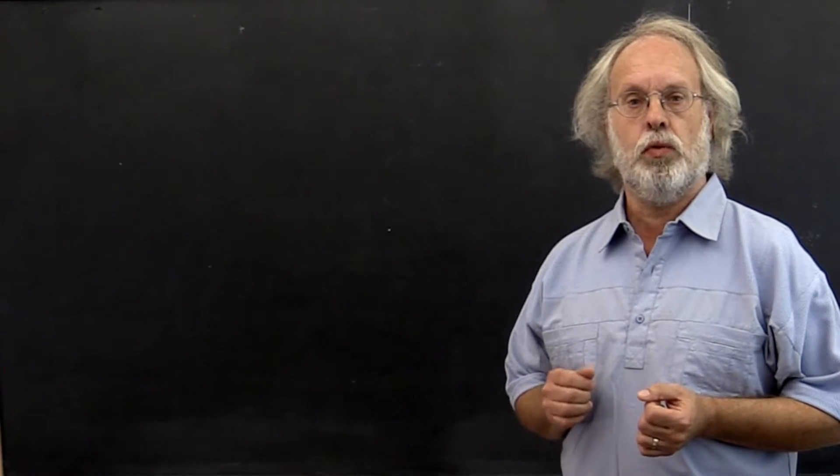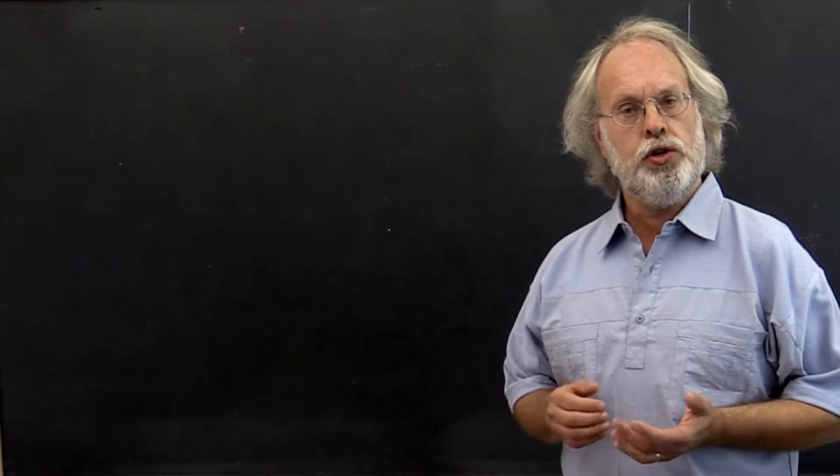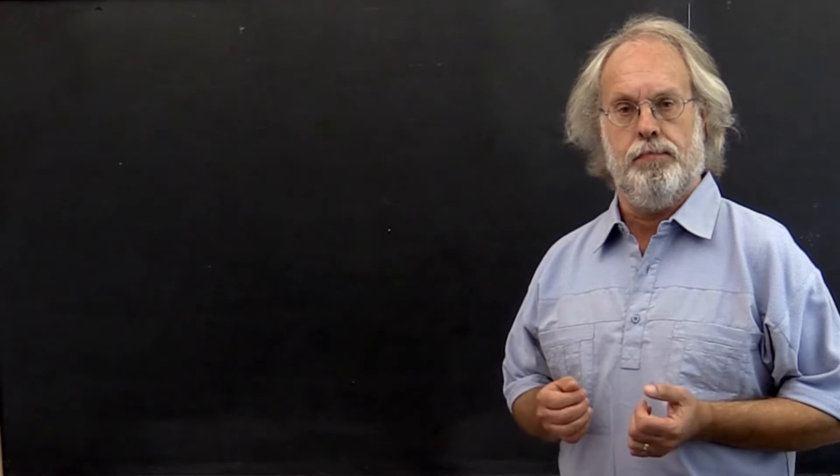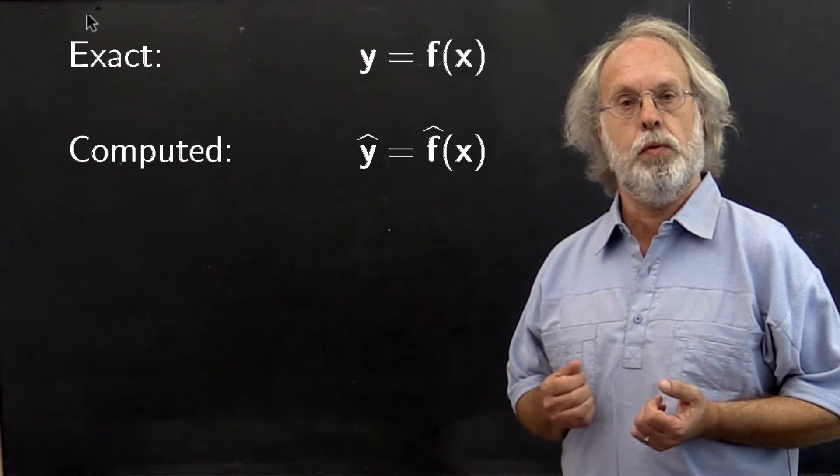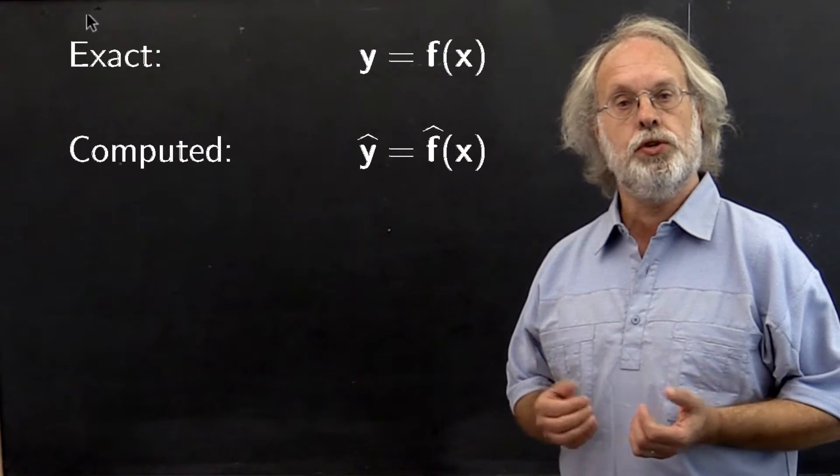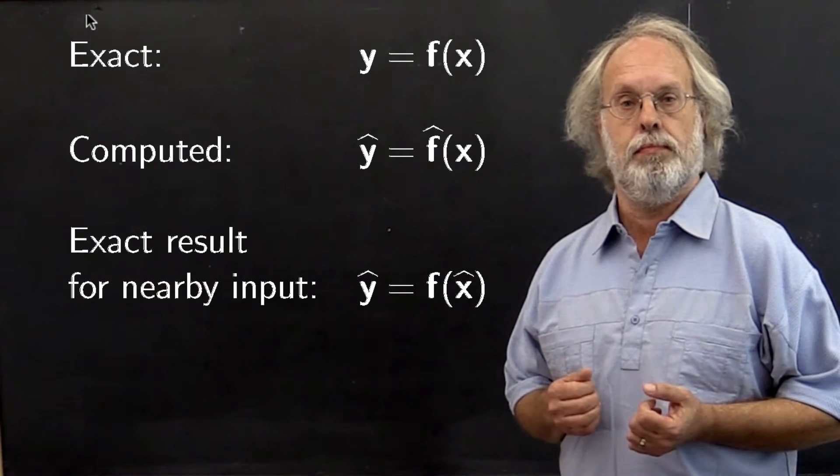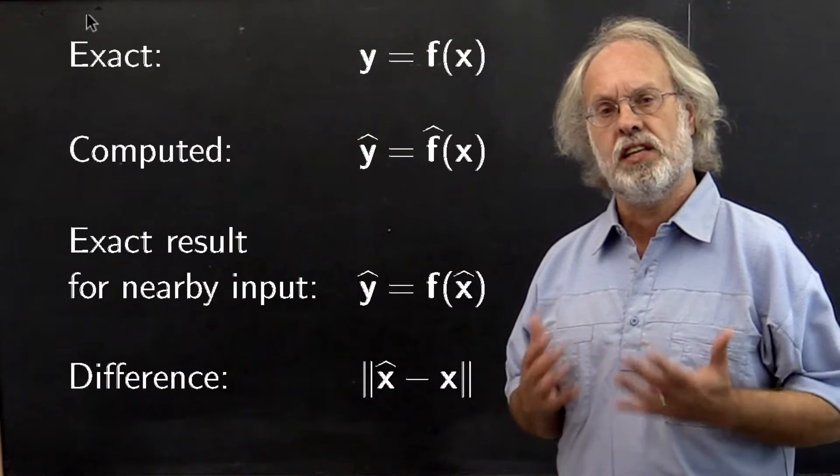An important concept that we will study in depth is the notion of the stability of an algorithm. This requires one to reason that the computed approximate solution to a problem is the exact solution to a slightly changed problem. How can we quantify slightly changed?